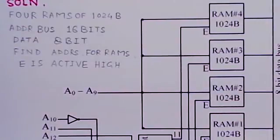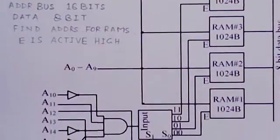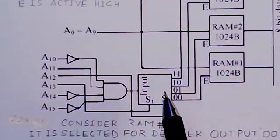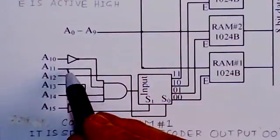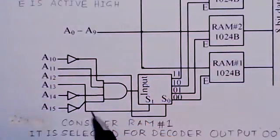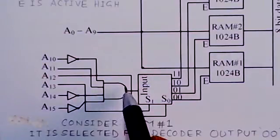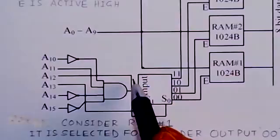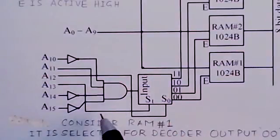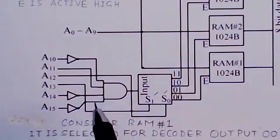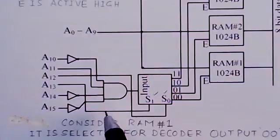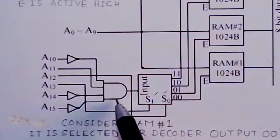That means the chip would be selected when this goes high, and this comes from the decoder. This decoder, you can see here, has inputs like A10, A11, A12, A13, A14, and A15. Here, not all are inputs; like A12 and A13, these are S1 and S0. But these are the four inputs: A10, A11, A14, and A15. These are the inputs to the AND gate.